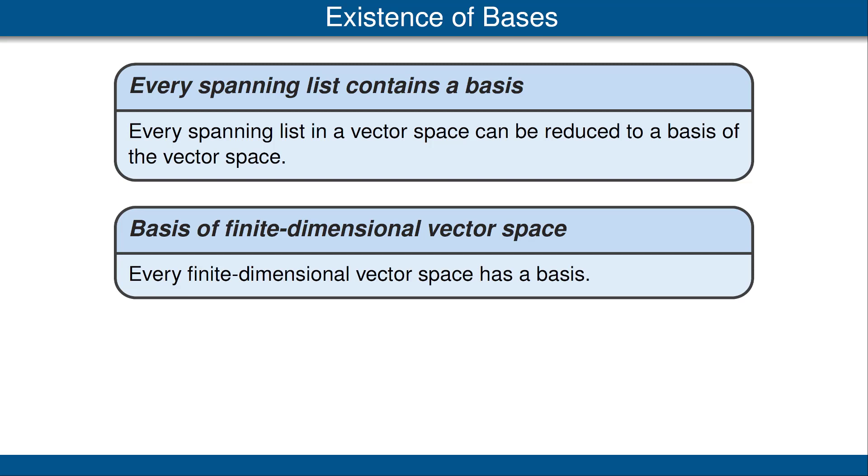Our second important result states that every finite dimensional vector space has a basis. Let's think about this for a second. The definition of a finite dimensional vector space is a vector space that has a list, meaning a finite list, that spans the vector space. So a vector space is finite dimensional if it has a spanning list. Then the first theorem shown here shows that we can throw away some vectors in that spanning list and get a basis. That's the proof that every finite dimensional vector space has a basis.